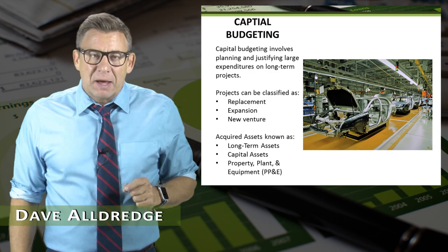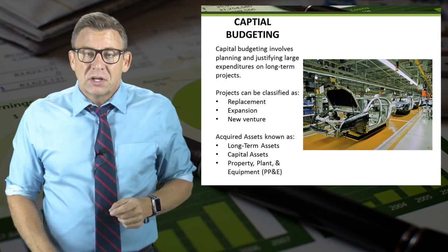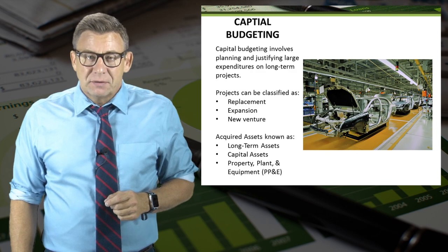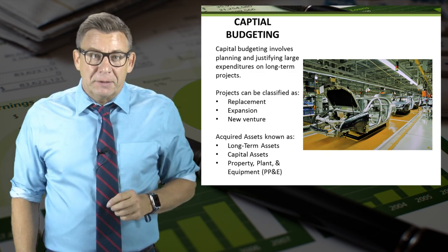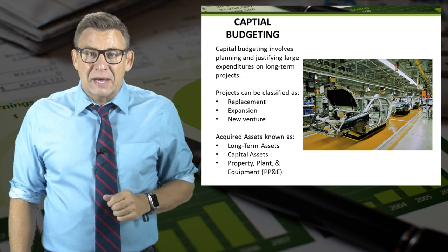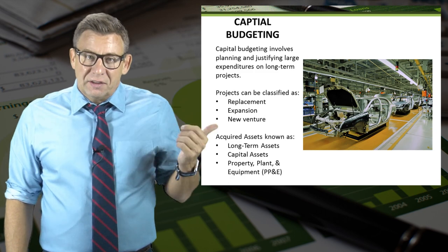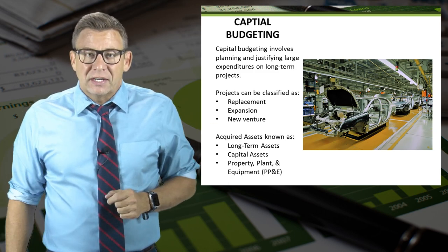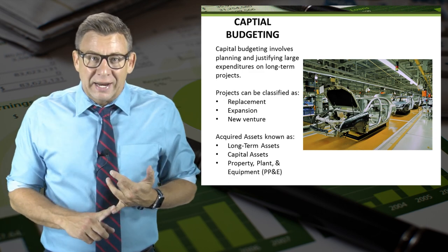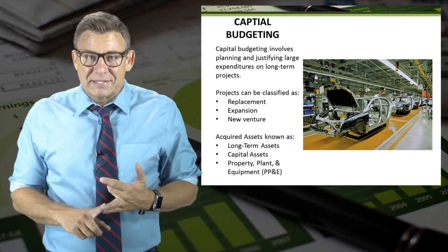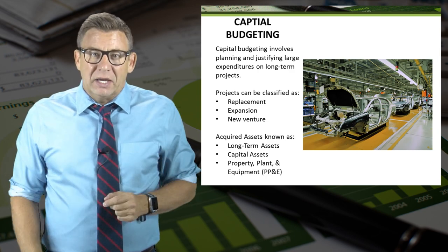Capital budgeting is the process companies undertake to plan, justify, and purchase long-term capital projects. Usually, these projects require large sums of money. This picture is an example of items that would require capital budgeting to acquire — you can see the factory and some machinery, etc. These assets are commonly known as long-term plant assets, or capital assets, or property, plant and equipment — PP&E for short.